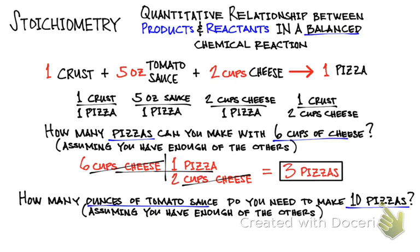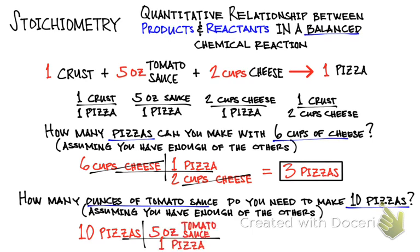Here's another one: how many ounces of tomato sauce do you need to make 10 pizzas, again assuming you have enough of the other ingredients? Let's start with what's given — 10 pizzas. The ratio between tomato sauce and the number of pizzas according to the recipe is five to one — five ounces of tomato sauce per one pizza. Using dimensional analysis, the number of pizzas cancels out and we would need a total of 50 ounces of tomato sauce to make 10 pizzas. So stoichiometry is basically a ratio and proportion type of concept.